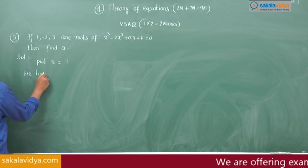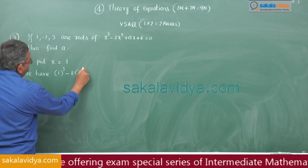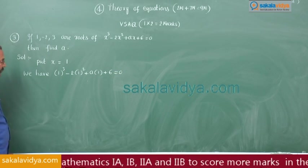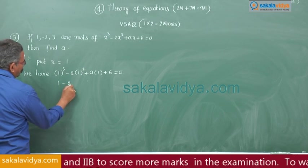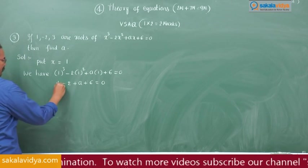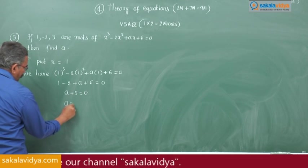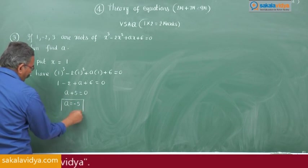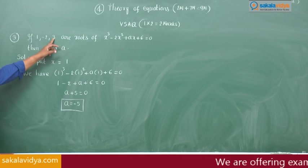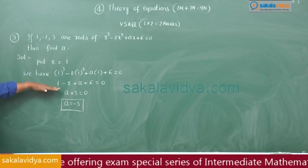We have 1 cube minus 2 into 1 square plus a into 1 plus 6 equals 0, giving 1 minus 2 plus a plus 6 equals 0, so a plus 5 equals 0, therefore a equals minus 5. Even if you substitute x equals minus 2 or x equals 3 you get the same answer, but x equals 1 is the simplest to use in this problem.